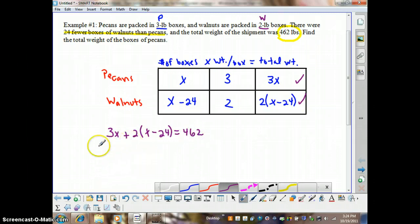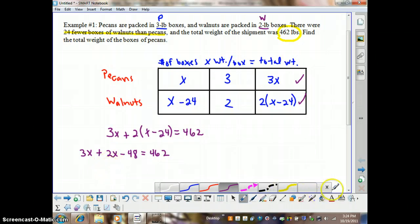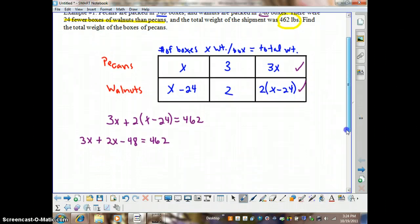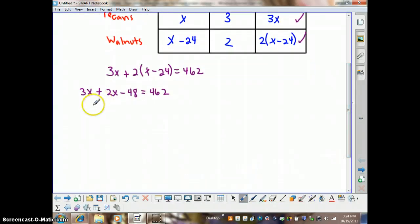So the next thing we're going to do is solve for x. We need to distribute the 2. So we're going to take the 2 times the x. And we're going to remember to distribute the 2 times the negative 24. So we'll have minus 48 equals 462. And then we'll combine like terms. 3x plus 2x is going to give us 5x. So we have 5x minus 48 equals 462.